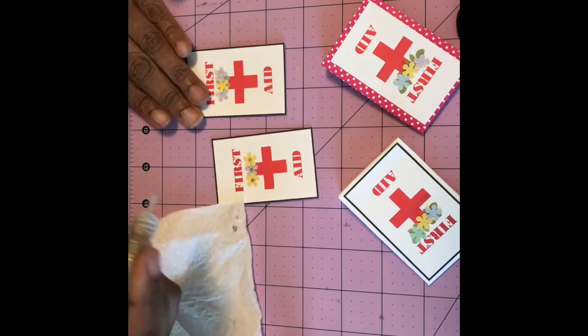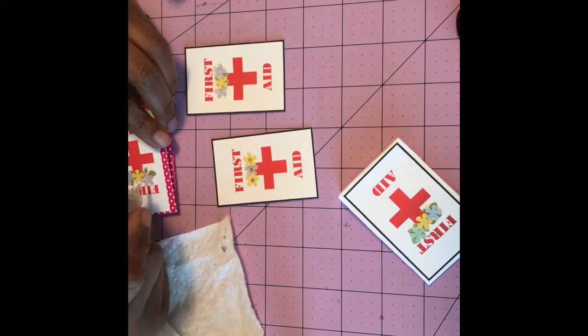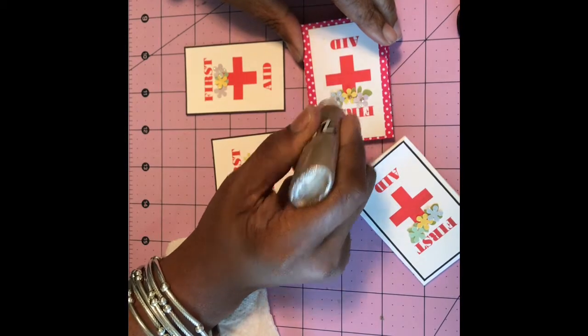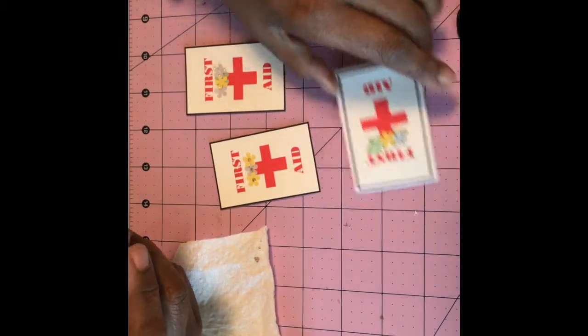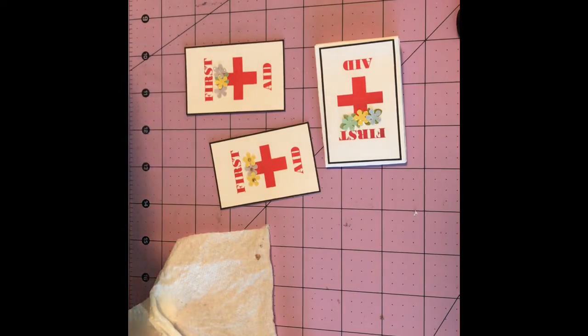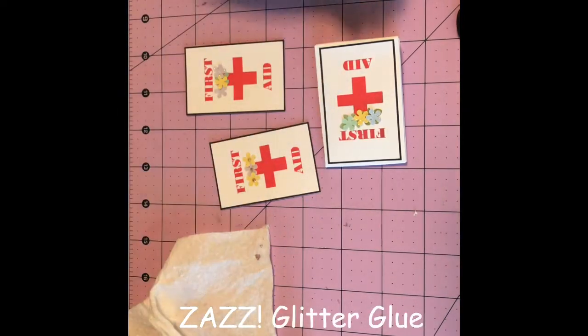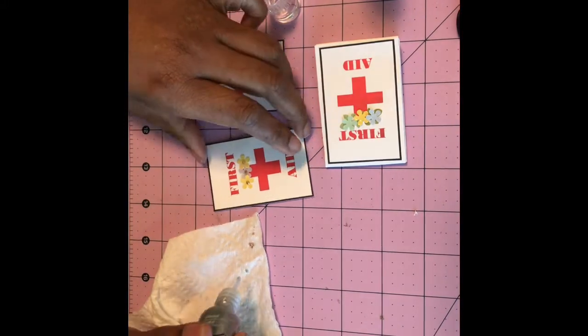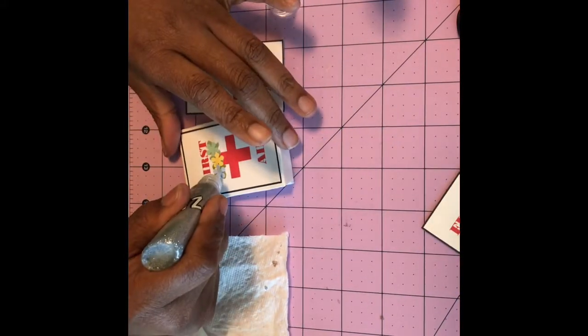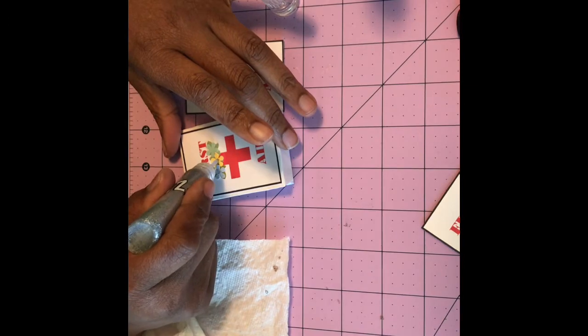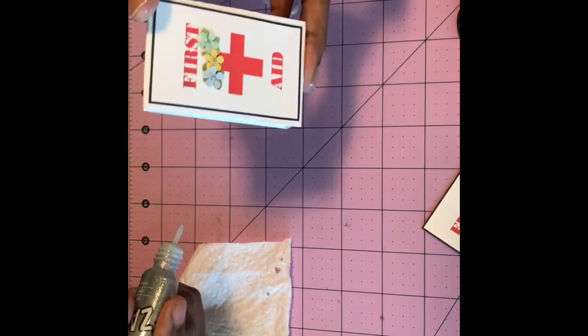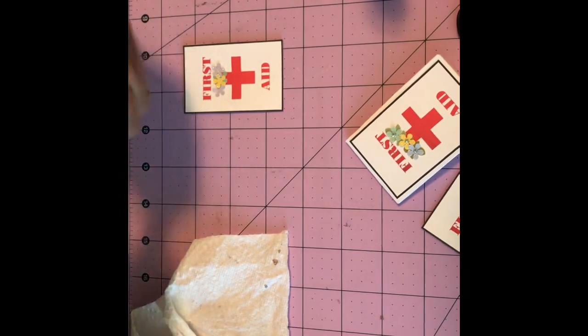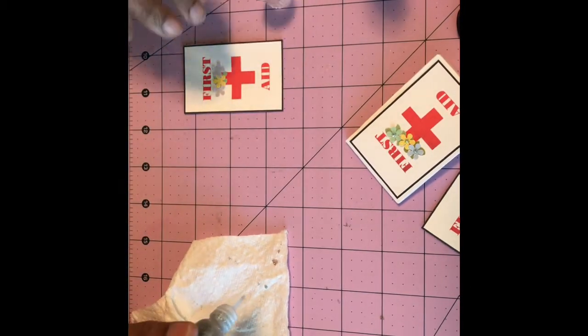So here I am adhering those mini, I call them micro flowers, and I'm adding some Zig, some Zigs. It's called Zazz. It's like Stickles and they're sparkly. I think that was a champagne color and I also used a silver color here. So I used this look before on a couple of cards and I really liked it. I really like those mini flowers.